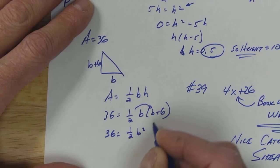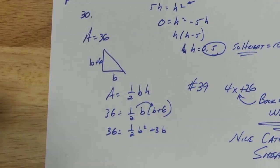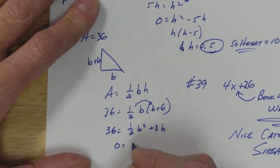One half b squared plus 3b, because one half of 6 is 3. So let's get it. There's a b squared, so let's get it set equal to zero.